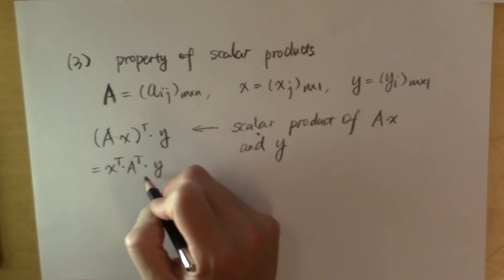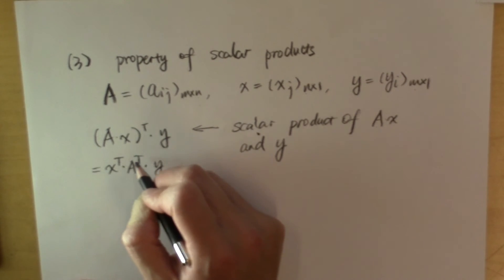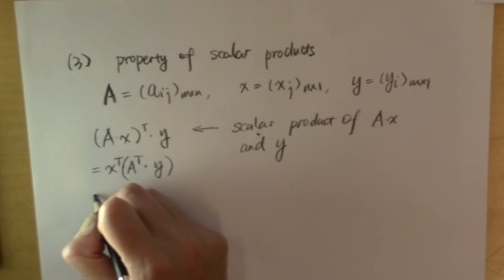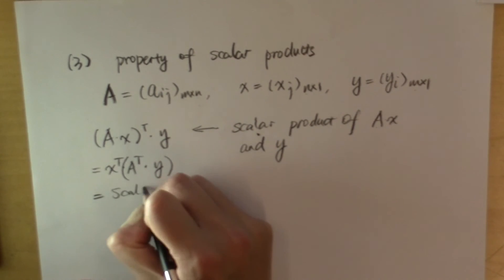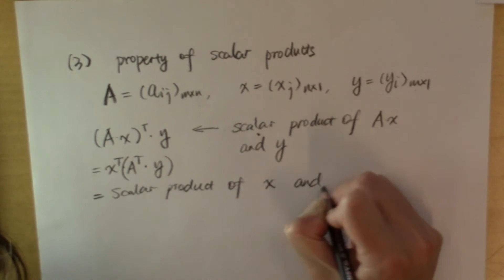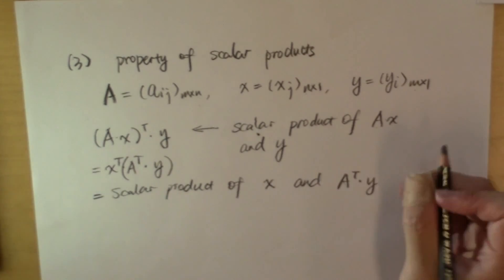And because the associative law still applies in matrix multiplication, we can multiply these two first. Now what is this expression? This is the scalar product of the vector X and the vector A transpose times Y.